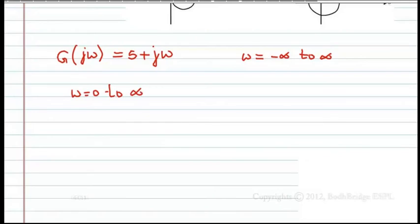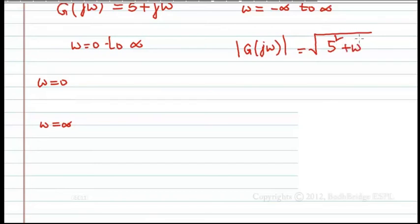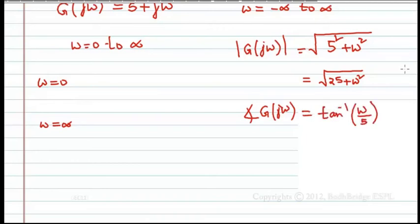First of all, let us see at omega equal to 0, omega equal to infinity. What is the magnitude? Mod g of j omega is square root of 5 square plus omega square, that is equal to square root of 25 plus omega square. And what is angle of g of j omega? Angle is equal to tan inverse omega by 5.